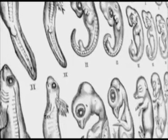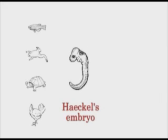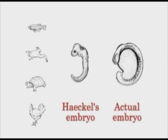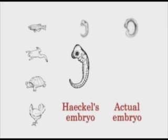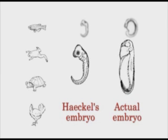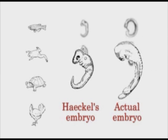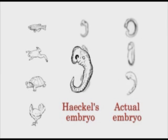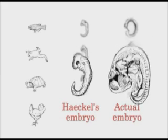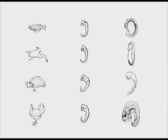The problem is that he faked his drawings. The early vertebrate embryos don't really look that similar at all. The problem with Haeckel's drawings wasn't just that they were inaccurate — they were actually false in many cases. But the real damage was done when these drawings entered biology textbooks decades ago, and they've never really been taken out.